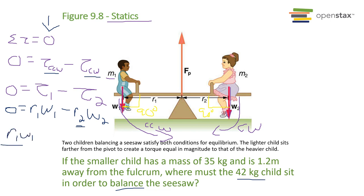Which turns it into distance one, weight one, over weight two, equals distance two. Now weight is mass times gravity, so you end up with r1, mass one, gravity, over mass two, gravity, equals distance two.